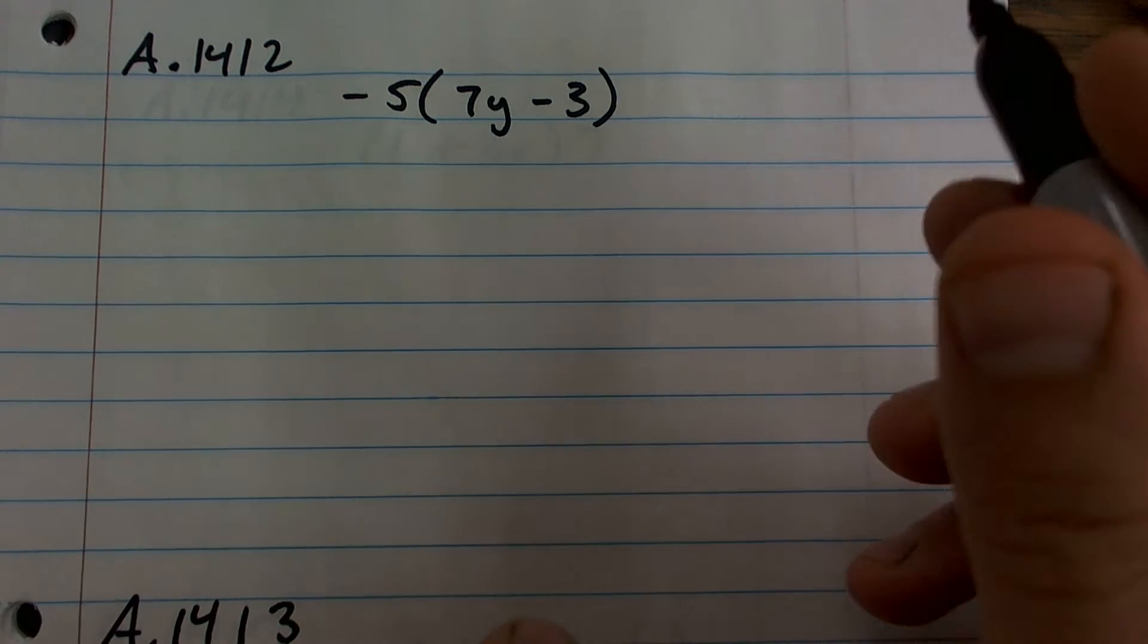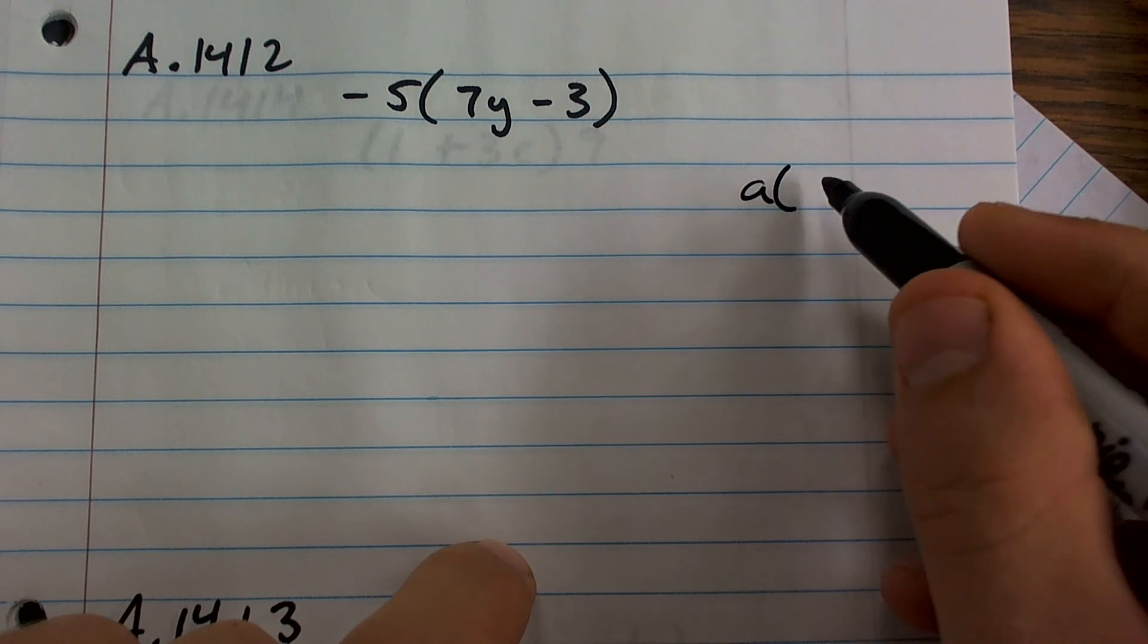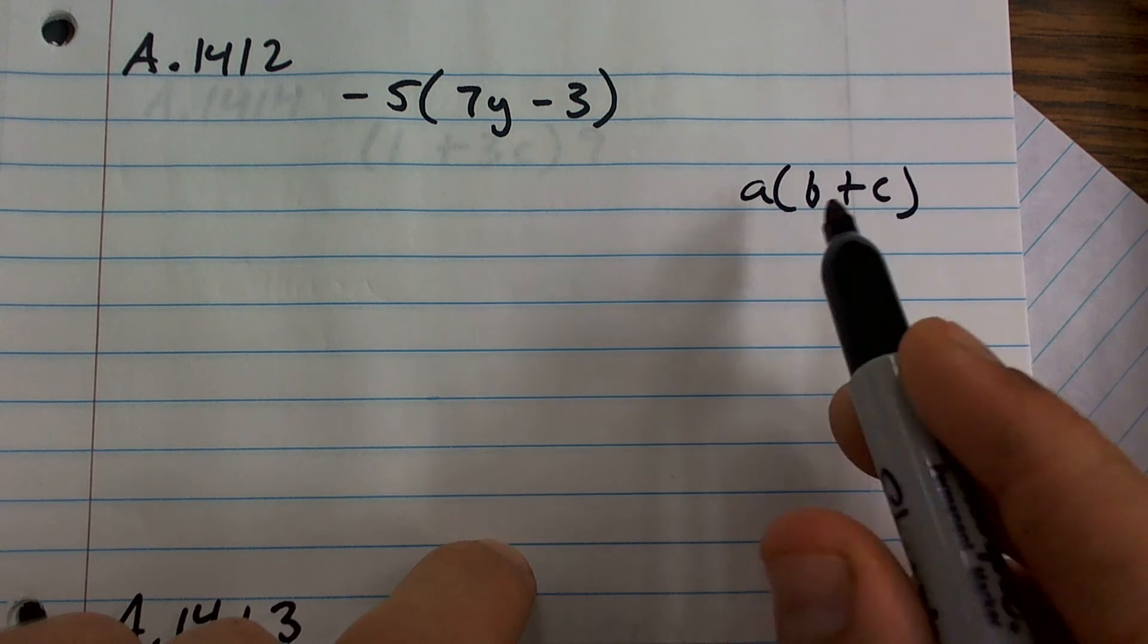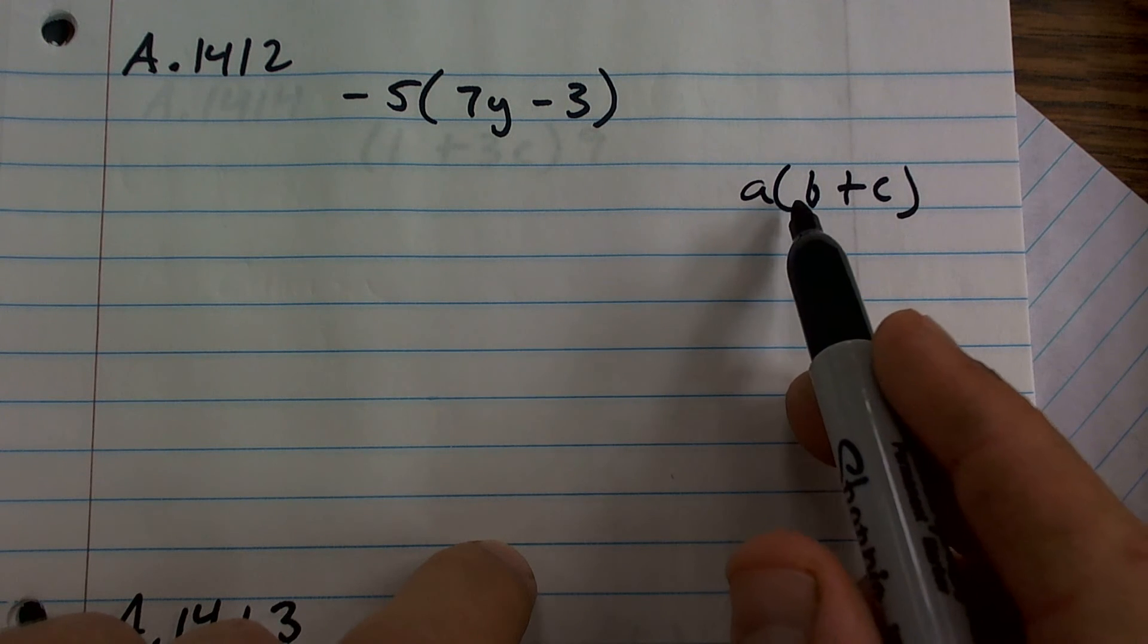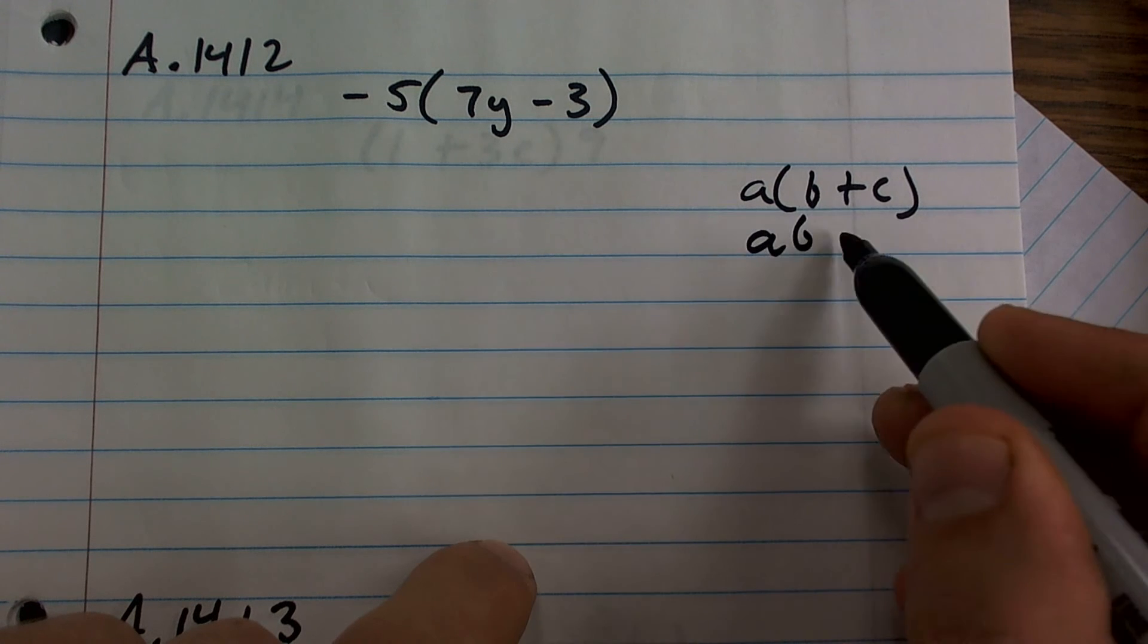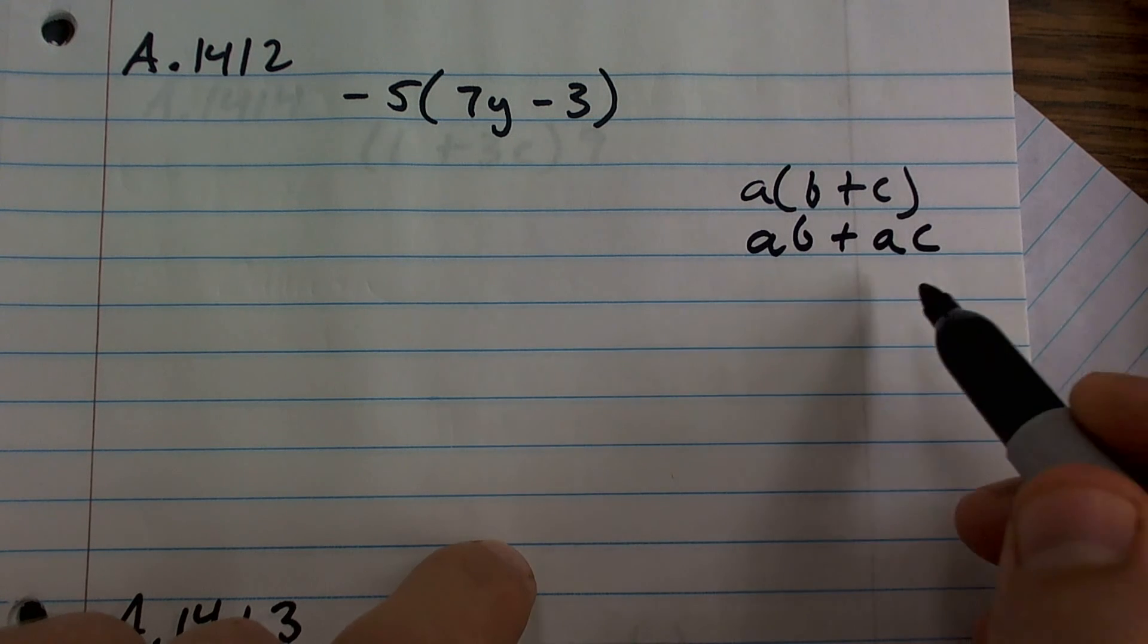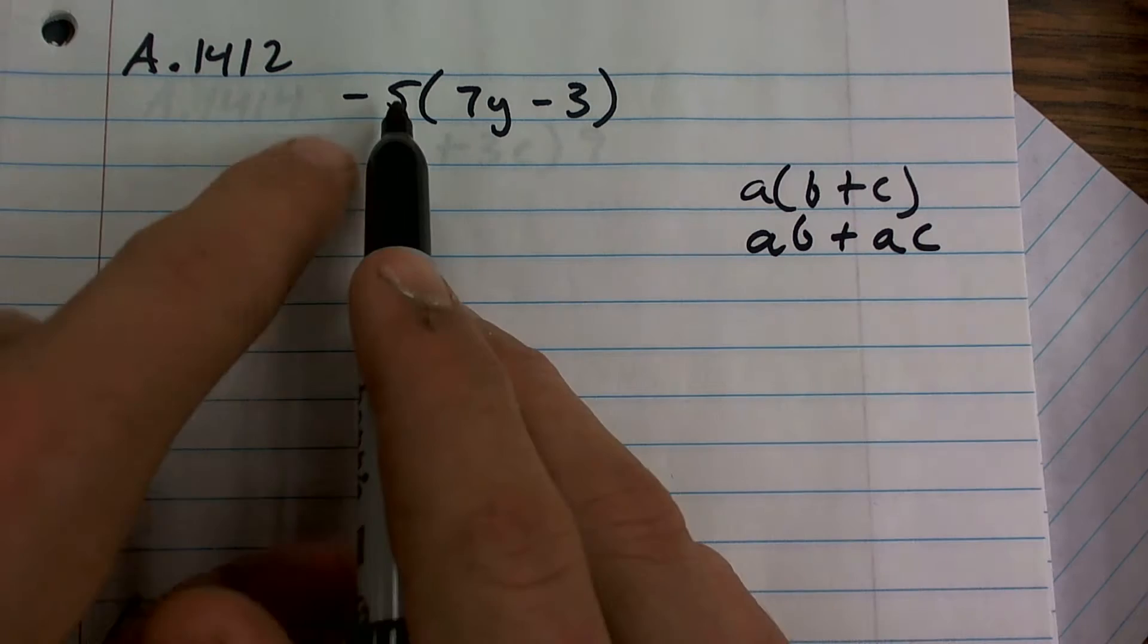Okay, for this problem here, remember our distributive property just states that whenever you have a number outside of the parenthesis and it's just right next to it so there's no operation except for multiplication, then that means you're going to multiply that term times both of the terms inside your parenthesis.